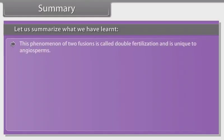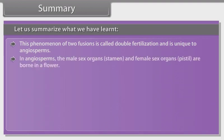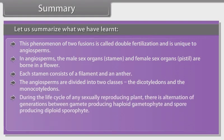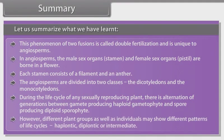This phenomenon of two fusions is called double fertilization and is unique to angiosperms. In angiosperms the male sex organ stamen and female sex organ pistil are borne in a flower. Each stamen consists of a filament and an anther. The angiosperms are divided into two classes, the dicotyledons and the monocotyledons. During the life cycle of any sexually reproducing plant there is alternation of generations between gamete producing haploid gametophyte and spore producing diploid sporophyte. However, different plant groups as well as individuals may show different patterns of life cycles: haplontic, diplontic or intermediate.